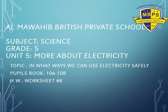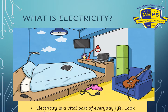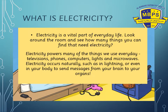Your homework today is worksheet number 8. Now let's start the lesson. What is electricity? It's a vital part of everyday life. Look around the room and see how many things need electricity. It powers televisions, phones, computers, lights, and microwaves. Electricity also occurs naturally, in the form of lightning and even in our human bodies.